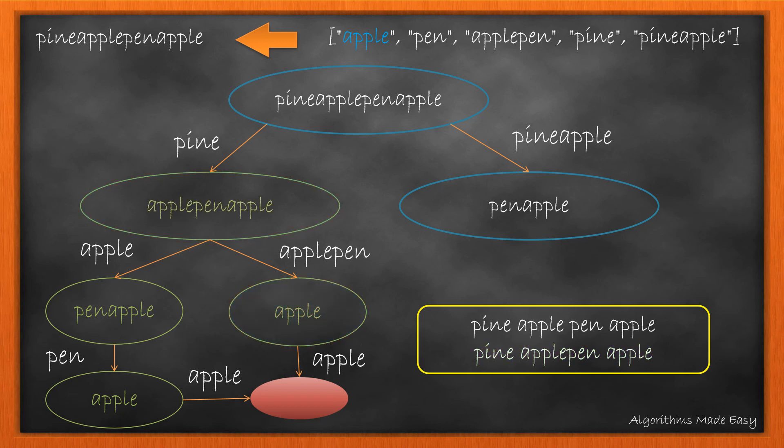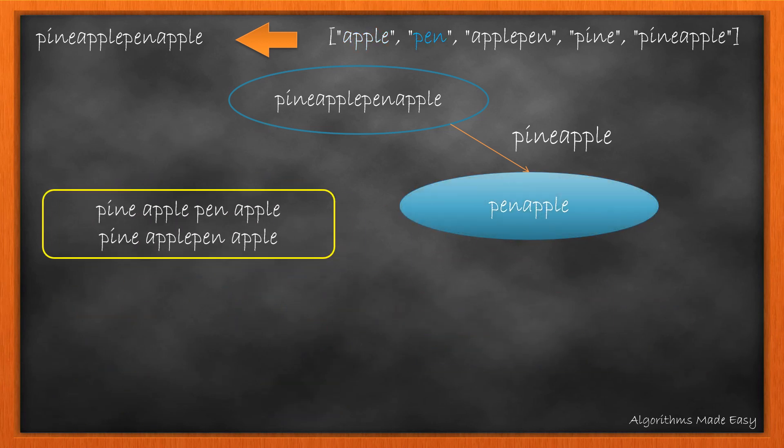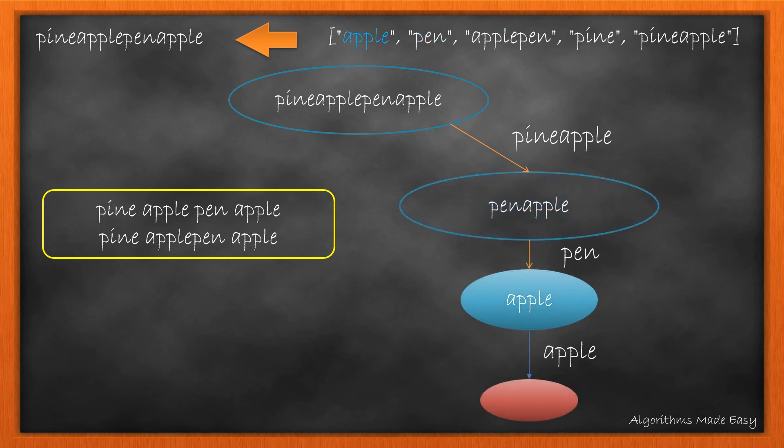With this, the left path is completed. So, we now go to the other part of our tree or diagram and break the word as we did earlier.